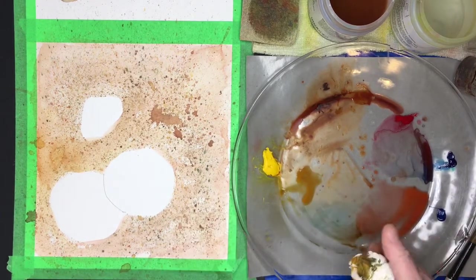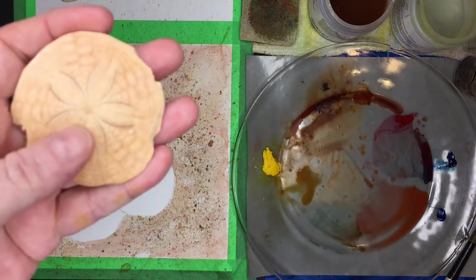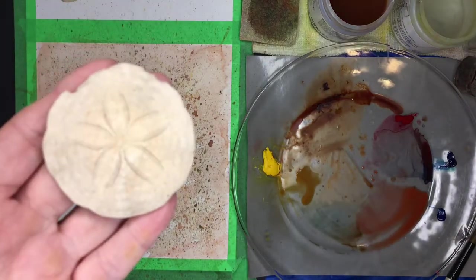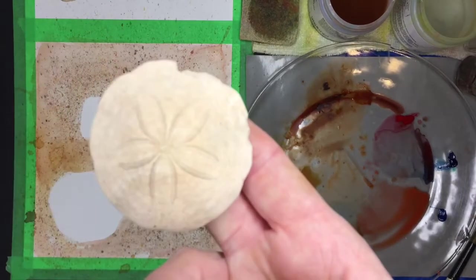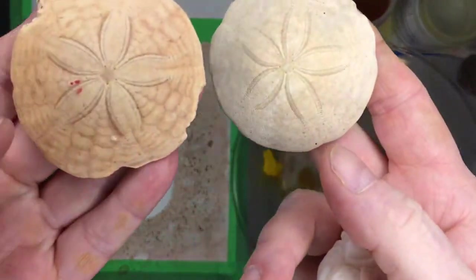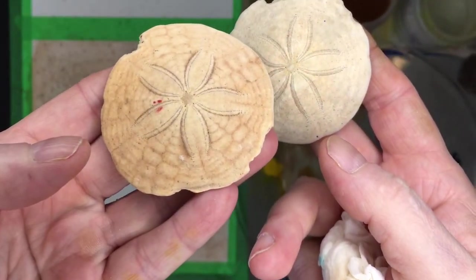So the sand dollars are these ones. Show you this one. You see this one is a light brown. Whoops, I don't want to make them fall, they're gonna break. And this is a darker brown, so we're gonna try to create that.